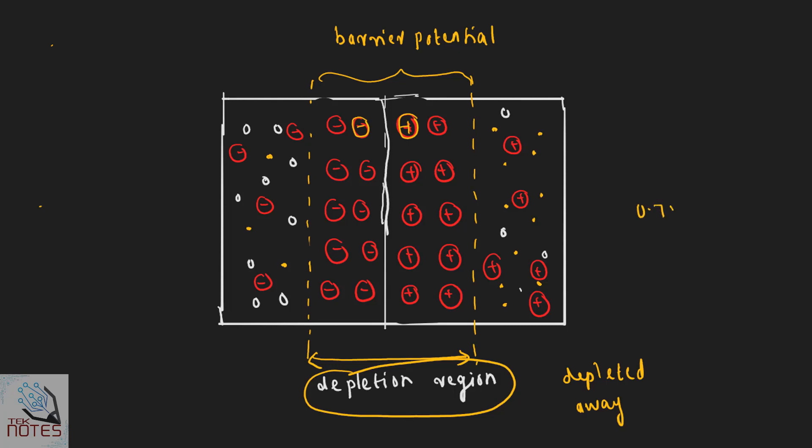The barrier potential value for silicon is 0.7 volts, and the barrier potential value for germanium is 0.3 volts.